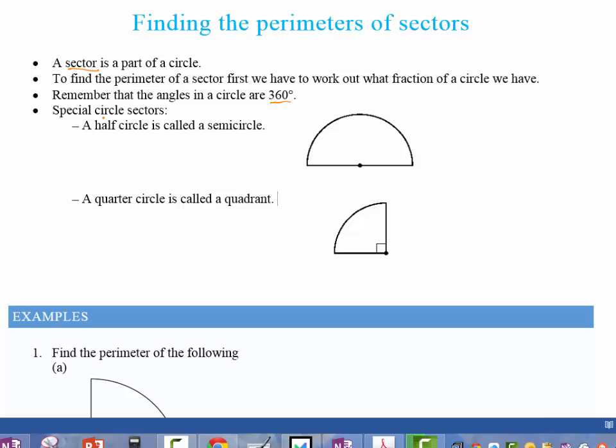And here I've got a couple of special sectors. The first one I've got here is a semicircle because it's half a sector. And this next one is called a quadrant. And quad, meaning a quarter, it's a quarter of a circle.